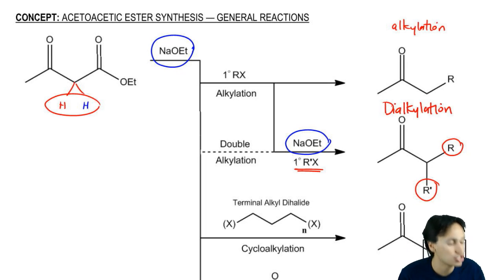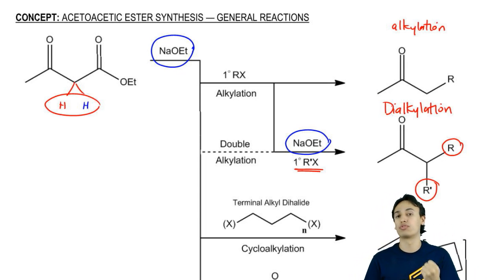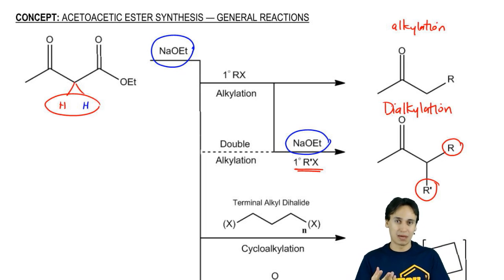Just keep in mind, to do a dialkylation, you need to react with the base twice in order to get both protons off. It can't be two equivalents of base at the same time. It needs to be base, then alkyl halide, then base again, then alkyl halide again.